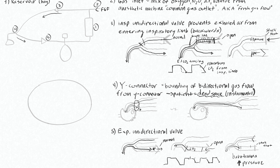If you see end-tidal CO2 going up and staying elevated with an open valve situation, that valve issue is a potential problem. It's also easy to look down at your CO2 absorber to make sure it isn't fully exhausted — because when the CO2 absorber has exhausted its ability to absorb CO2, you'll start to recirculate CO2 and will never see your end-tidal tracing return to zero.